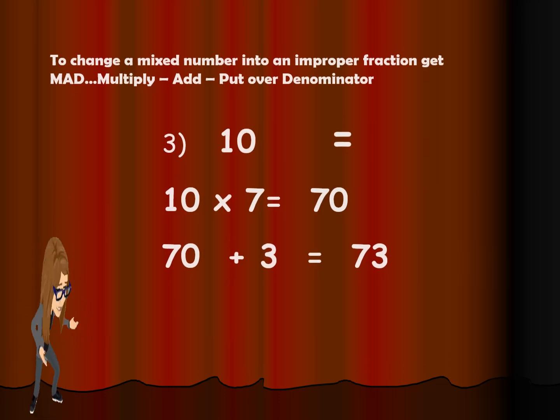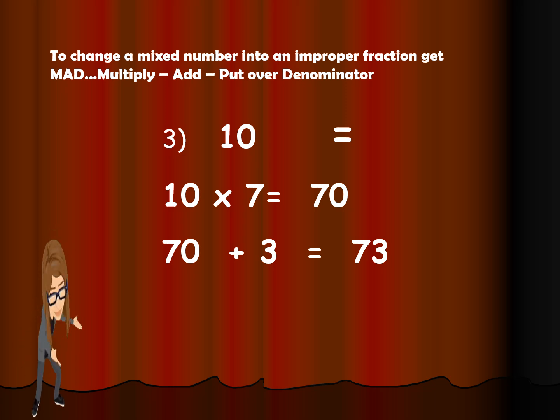Now, let's proceed to number 4. 10 and 3 over 7. So let us multiply. 10 times 7 is 70, and 70 plus 3 is 73. So the answer is 73 over 7.